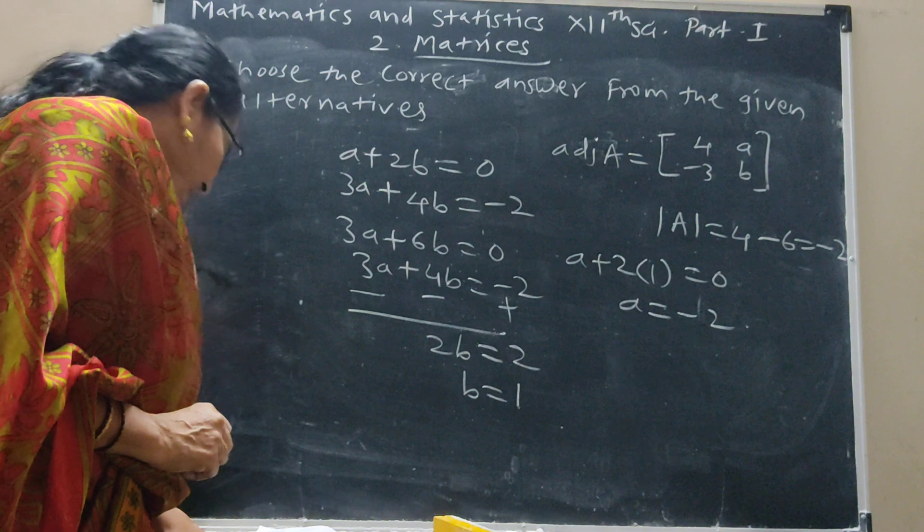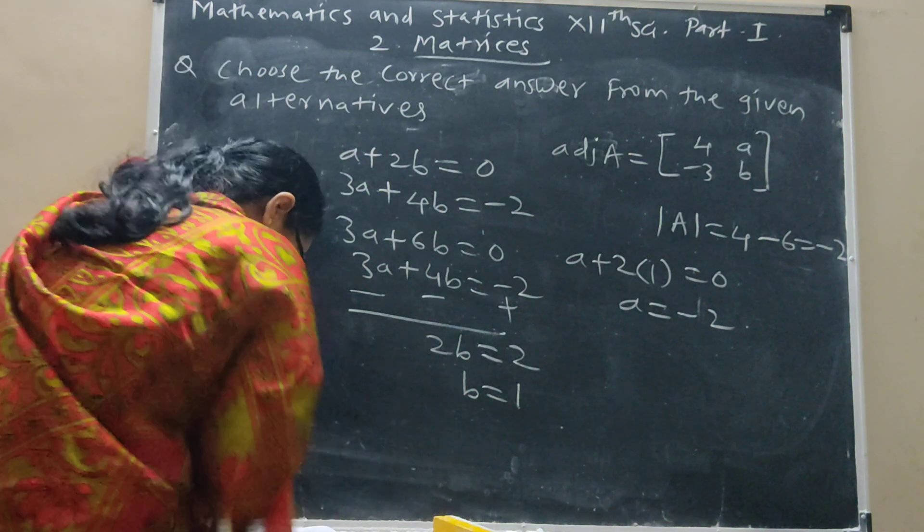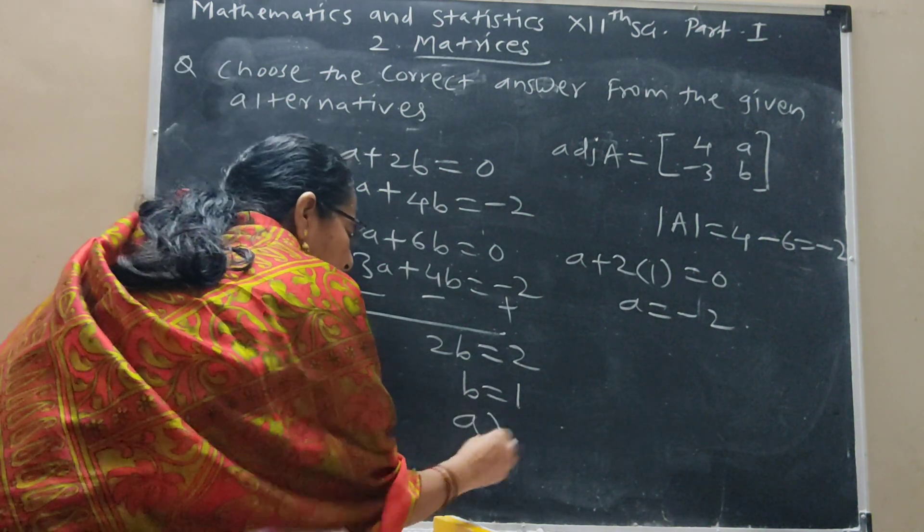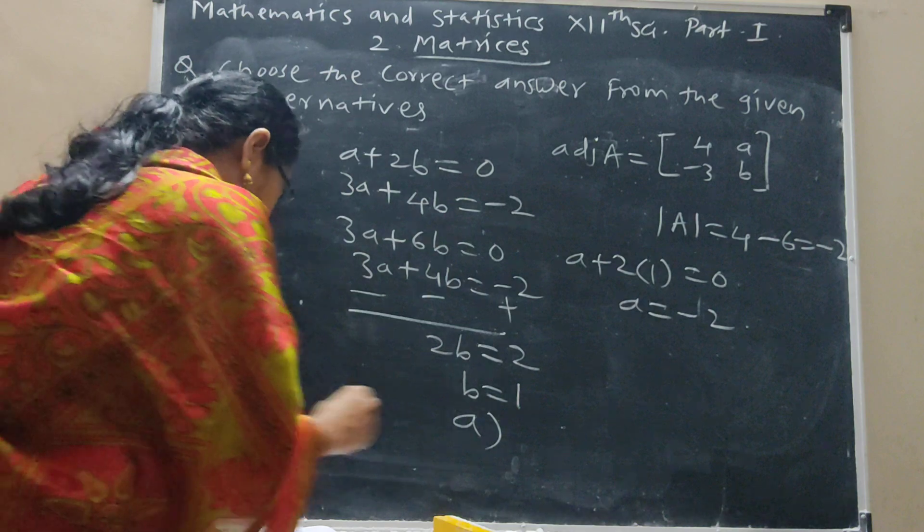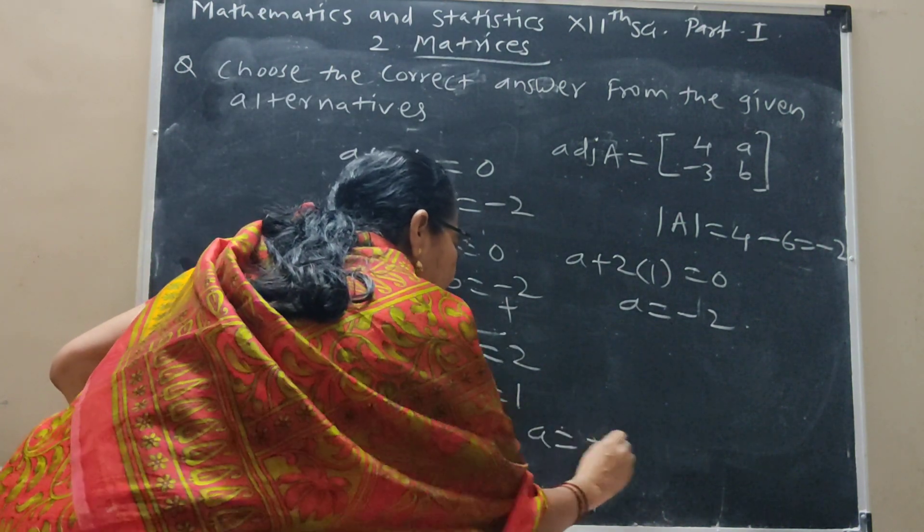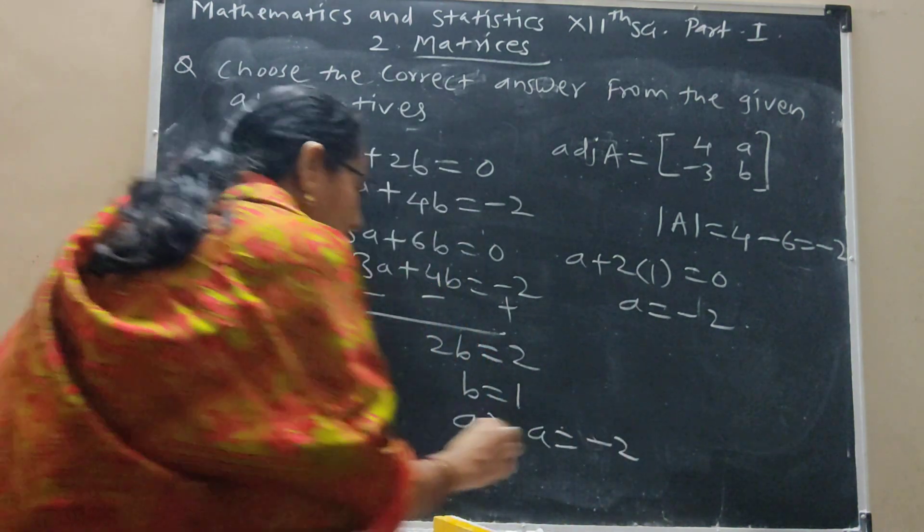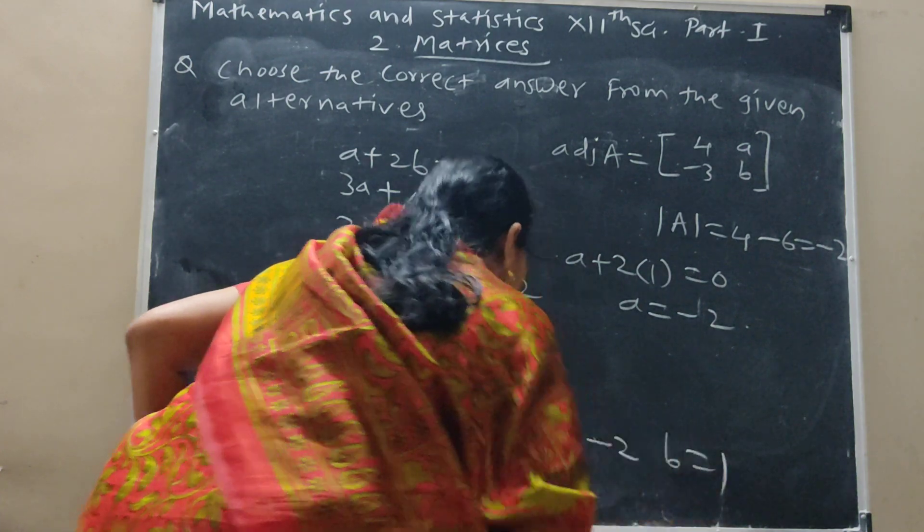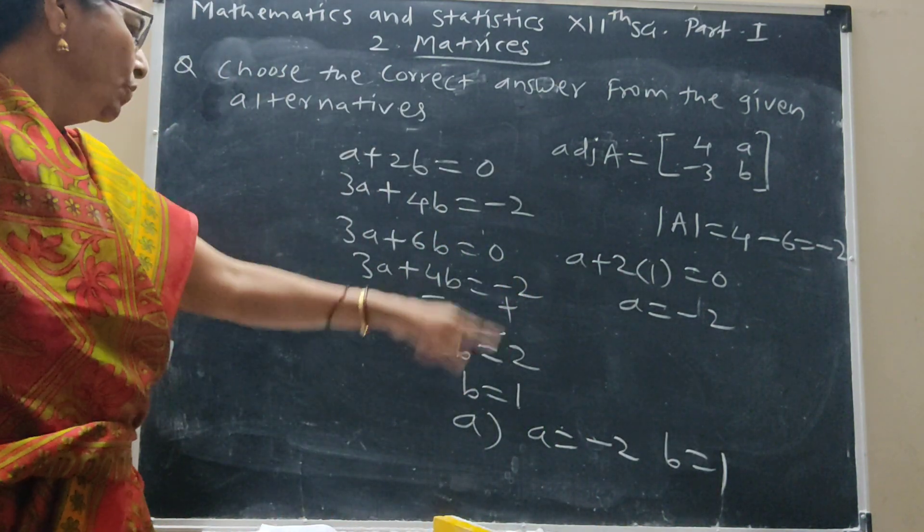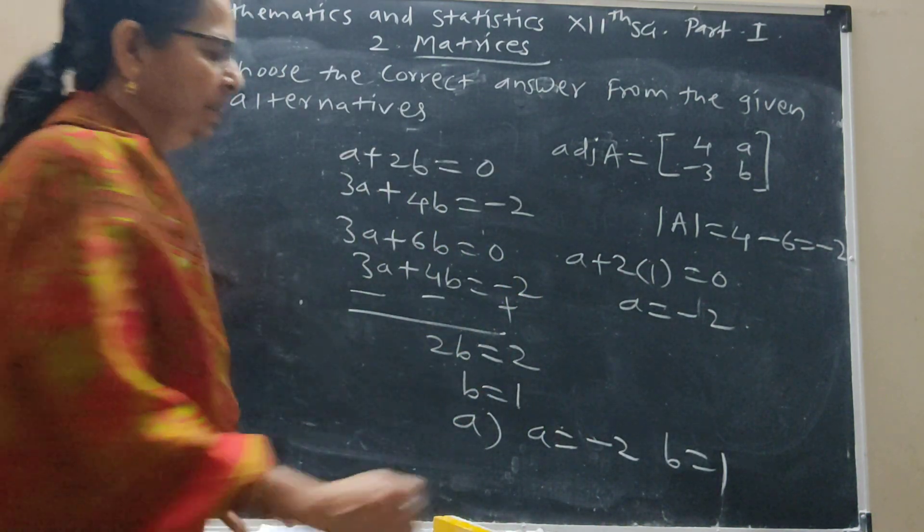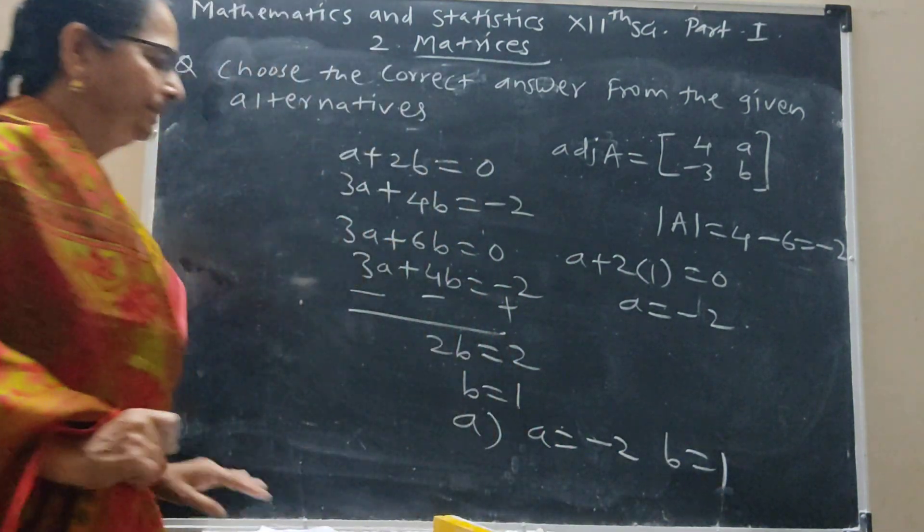So write A: a is equal to minus 2, b is equal to 1. This is minus 2. This is also what we need.